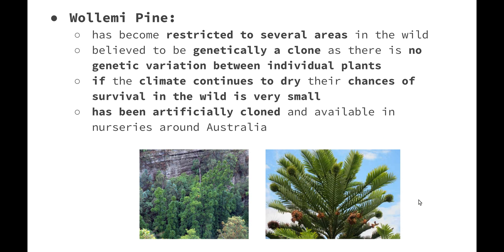The Wollemi pine is a group of trees that used to grow across a great distribution in Australia but has now become restricted to several areas in the wild and is believed to be genetically a clone — all the different plants are believed to have come from the same individual plant, with no genetic variation between them. If the climate continues to dry, as Australia moves northwards, the chances of survival in the wild are very slim. People are trying to clone them to create more individuals; however, because a clone is a genetic copy, there is still no variation. If there were a massive shift in Australia's climate, these clones would not be able to survive.